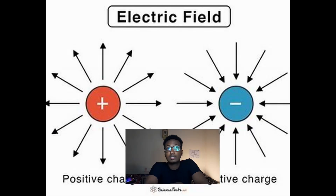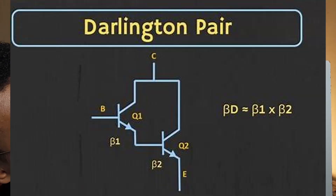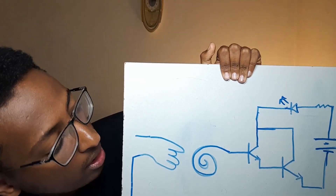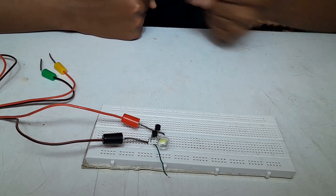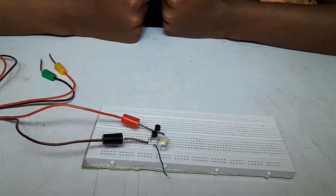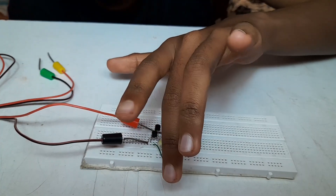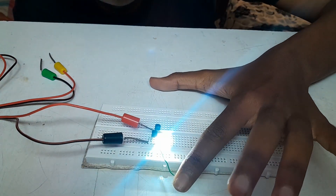First, electric field. Electric field, as we all know, is generated by any electric charge. This circuit — you may know it as a Darlington pair — is a very sensitive circuit that can detect electric field emitted by any kind of object. They usually use it as a power core detector. I made a Darlington pair; when I touch it, it creates light. I'm not connected to anything. You can test electrostatic charge using this Darlington pair or using a MOSFET.